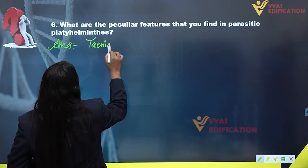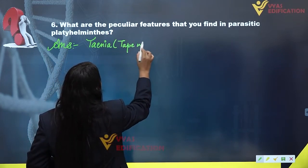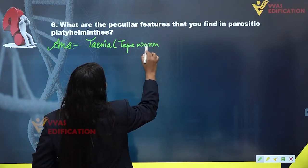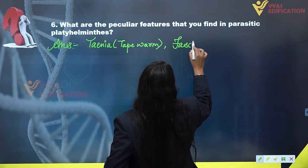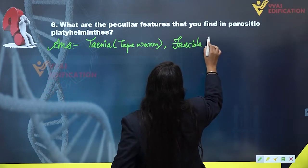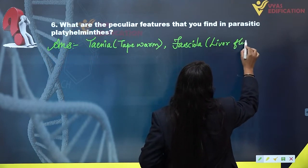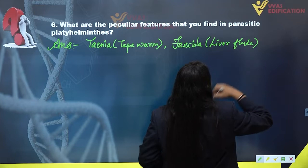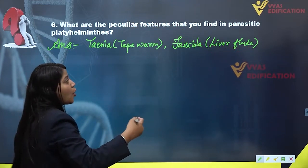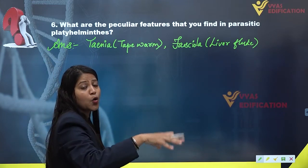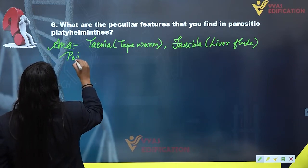Now writing the answer: Taenia, which is known as tapeworm, and Fasciola, which is the scientific name for liver fluke. These are the two parasitic platyhelminthes which live inside the host organism. Then we list the peculiar features.